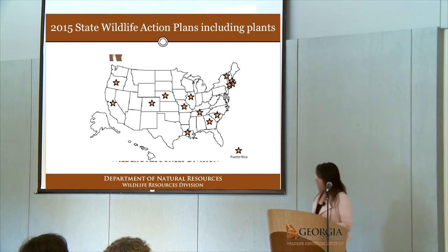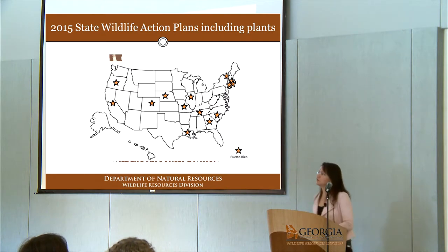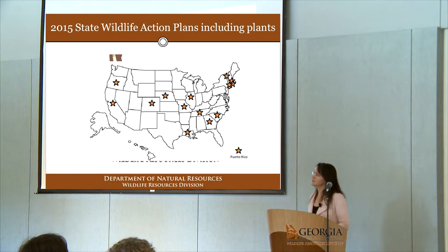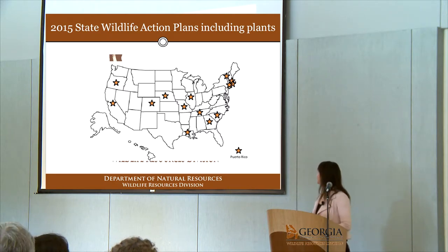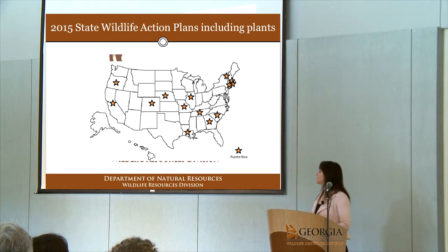These are the states that included plants in their 2015 round of state wildlife action plans. In the southeast, that would be Missouri, Tennessee, South Carolina, Georgia, Louisiana, and Puerto Rico.